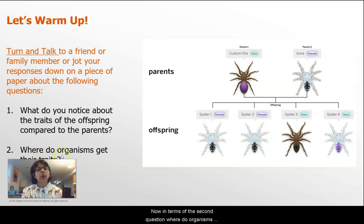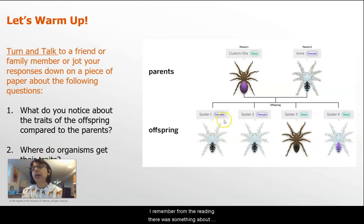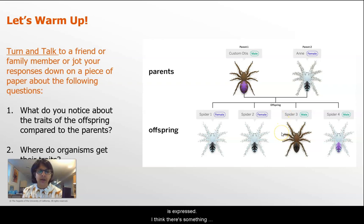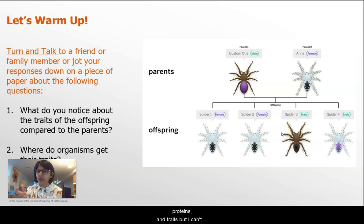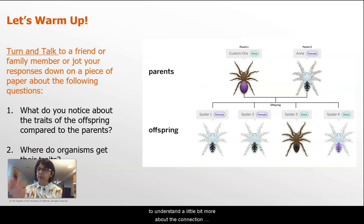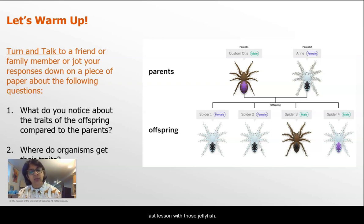In terms of the second question — where do organisms get their traits? — I remember from the reading there was something about genes and something about proteins. Those two seem to be connected in the way traits like body color, stripe color, or hair on the legs are expressed. There's a connection between genes, proteins, and traits, and we're going to dive into that more using spiders as our subject, to understand more about that connection, just like we began talking about last lesson with those jellyfish.